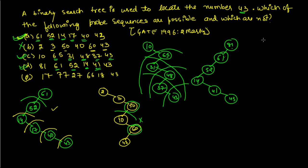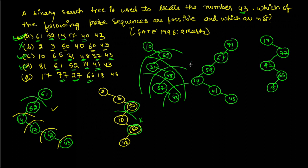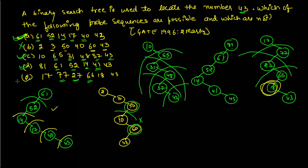In option E, root is 17, then 77 goes right, then 27 is greater than 17 but less than 77 so it goes left of 77, then 66 is greater than 27 so it goes right of 27, then 18 is less than 66 and goes here, and 43 should be greater. However, in the right subtree of 27 all data must be greater than 27, but 18 is not greater than 27. Therefore option E is wrong.